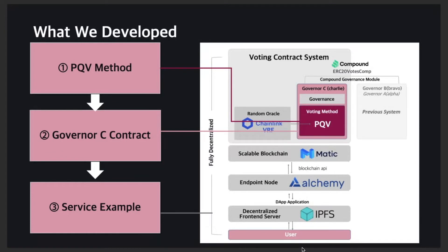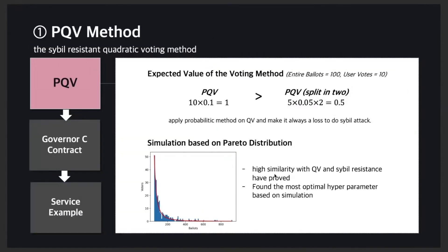Second, a voting contract system called Governor C. Last, we built a service using the Governor C contract. PQV is the sybil-resistant quadratic voting method this team developed. This method makes it always a losing proposition to perform a sybil attack by applying a probability element on quadratic voting.